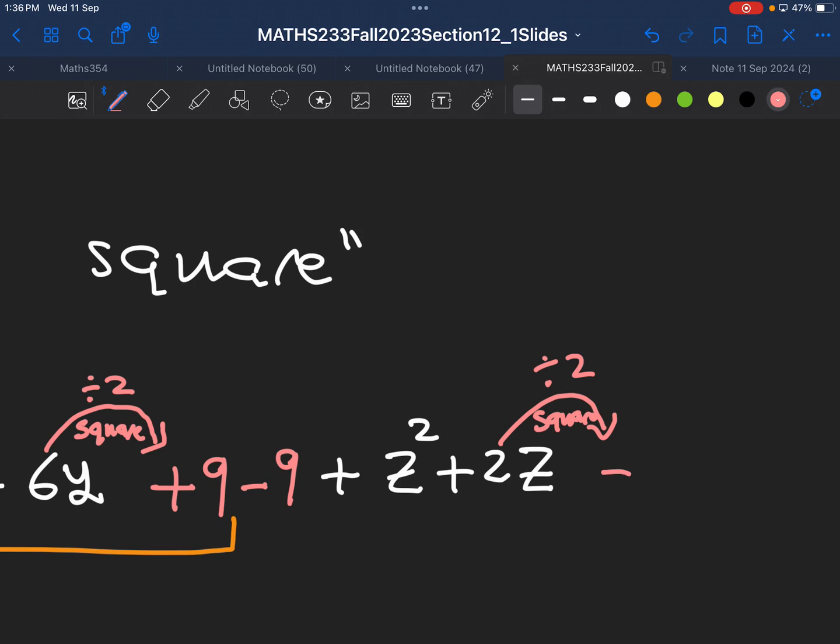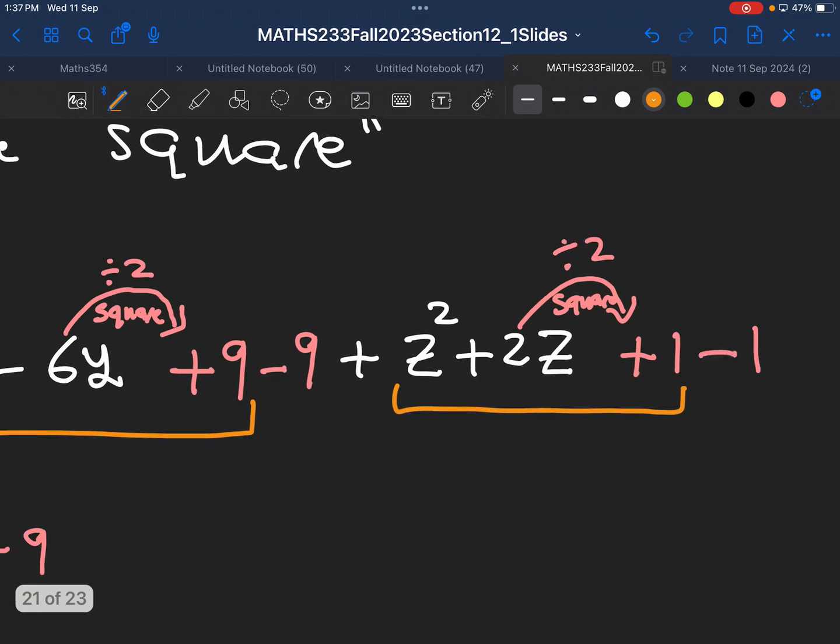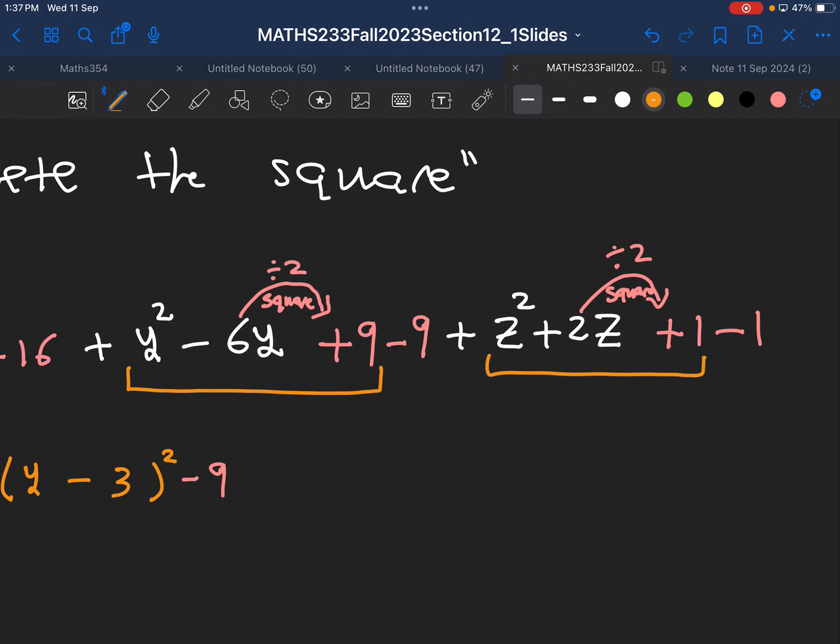If you do that, you will get plus 1, negative 1. And now you do those three terms together. Here we have z + 1. Why it's z + 1? Because square root of z² is z. Square root of 1 is 1. I keep 1. I put the plus because the sign in the middle is plus. Again, we have a negative 1.